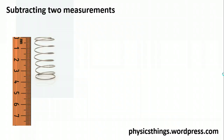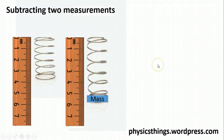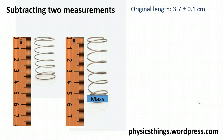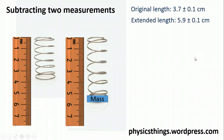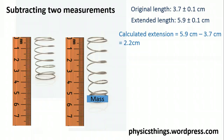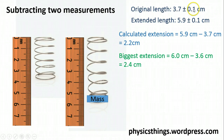What about when we subtract two measurements? Let's think about measuring the extension of a spring — here I have a spring without a mass on it, and here a spring that's been extended once I've added a mass. My original length is 3.7 ± 0.1 cm (absolute uncertainty from the ruler), and my extended length is 5.9 ± 0.1 cm. Once we've calculated the extension of 2.2 cm, we need to think about the absolute uncertainty for the extension.